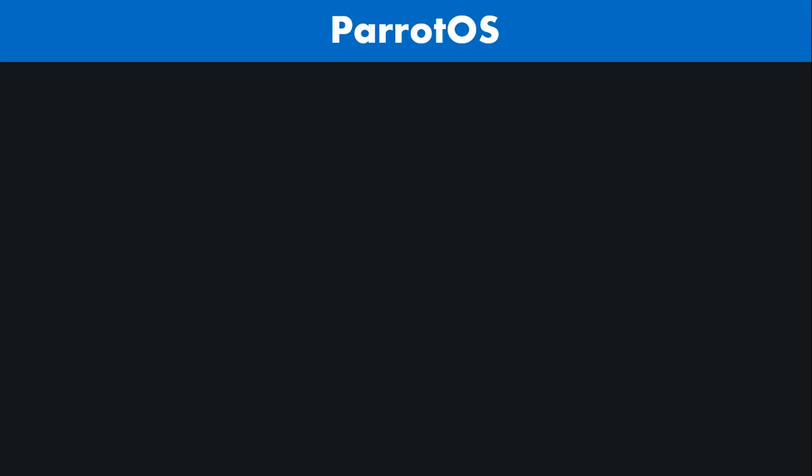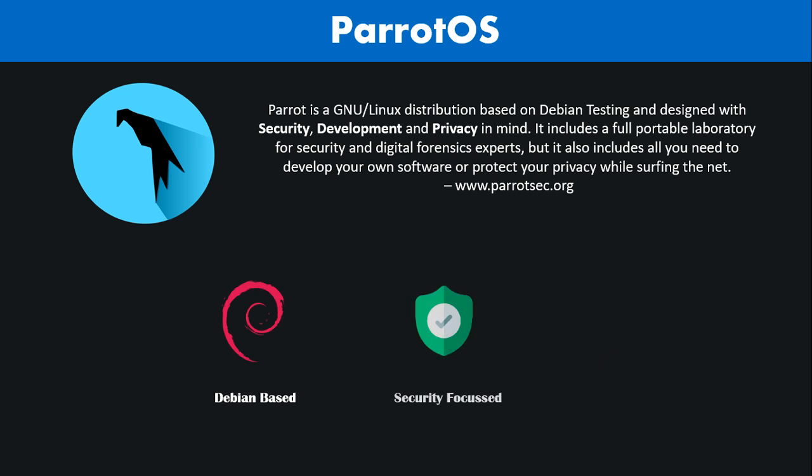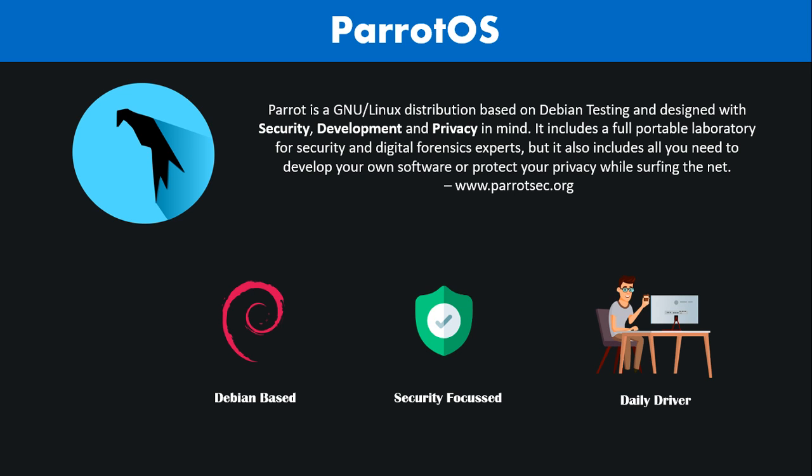Parrot OS, much like Kali, is also a Debian-based distribution of Linux, meaning the code repositories adhere to the Debian development standards. Parrot OS comes with its own arsenal of penetration testing and security related tools, and most of these tools are also available on Kali. Parrot was first released in 2013 and was developed by a team of security experts, Linux enthusiasts, open-source developers, and advocates of digital rights. The team was headed by Lorenzo Faletra, and Parrot is designed in a very unique way. While the OS has everything needed for a security expert, it doesn't present itself as a daunting learning experience for beginners who want to step into the world of ethical hacking and vulnerability analysis.